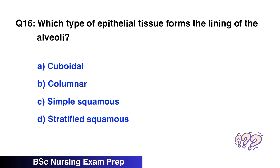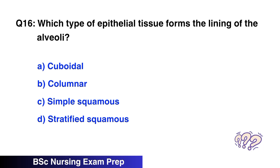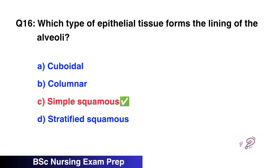Question number 16: Which type of epithelial tissue forms the lining of the alveoli? The right option is C, simple squamous.